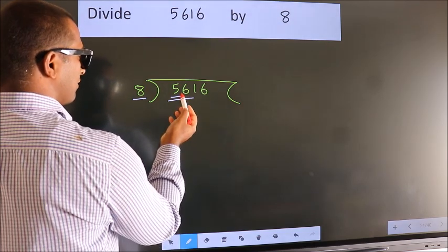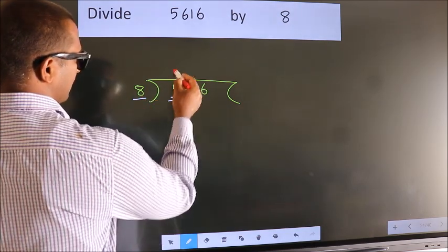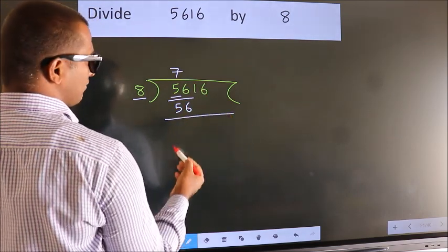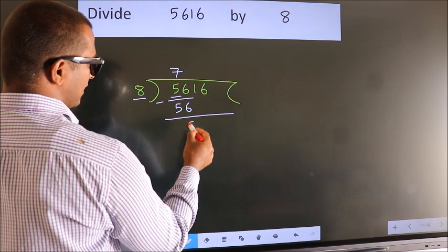When do we get 56 in the 8 table? 8 times 7 is 56. Now, we should subtract. We get 0.